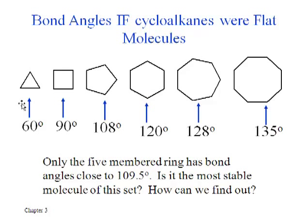If it were true that cyclopentane were flat, it would be the only stable ring because the others would have bond angles that are either way too big or way too small. Remember that 109.5 degrees is what tetrahedral bond angles are, and that's what alkanes prefer. But it turns out that six-membered rings are the most stable of all, and once you get to rings larger than six members you still have fairly stable situations.